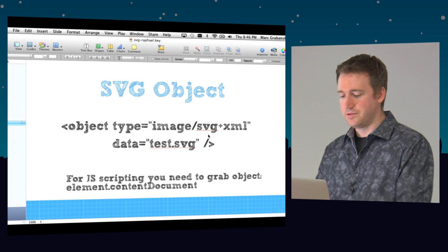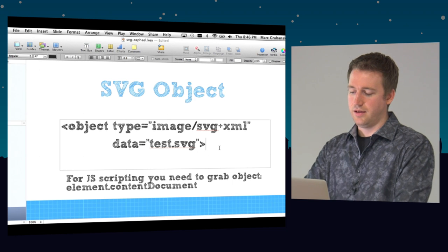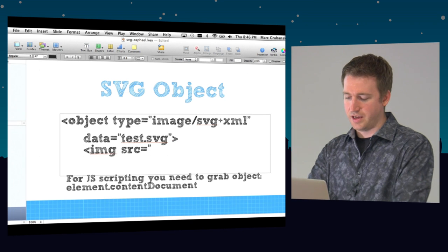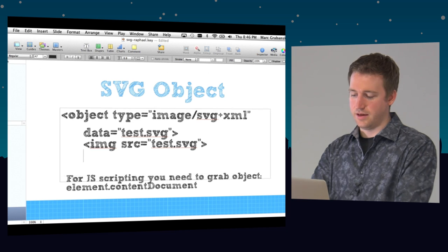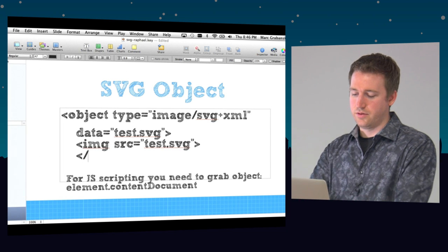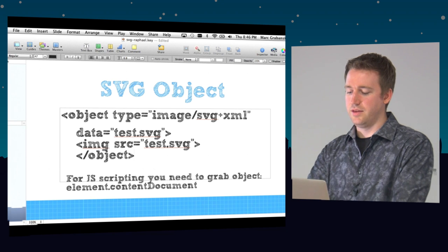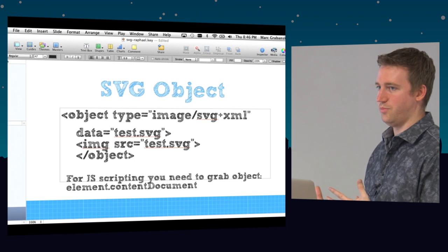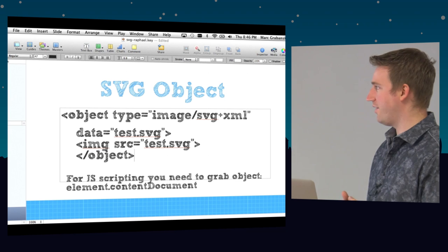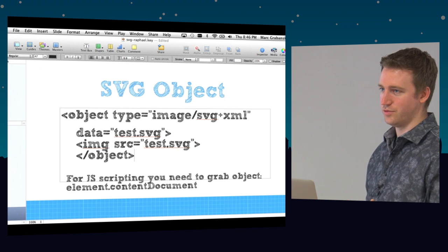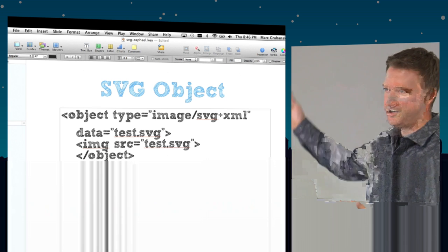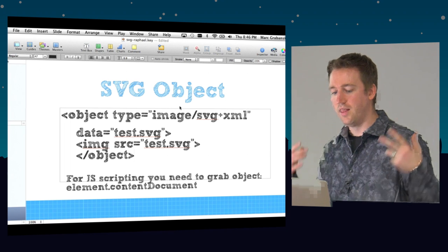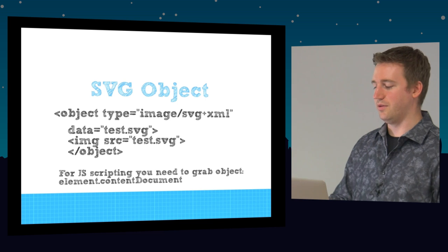What I've heard people doing for fallbacks is if the browser doesn't support the object tag, they'll put an image tag inside it pointing to the SVG, then close out the object tag. This is a way to have an interactive graphic for browsers that support SVG, and fall back to a regular static graphic for browsers that don't. If the browser understands the object tag, it won't look inside at the image tag.